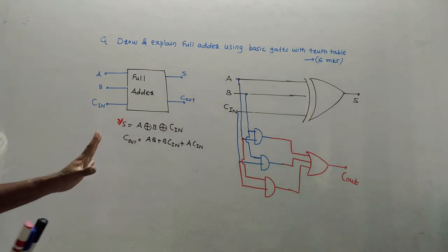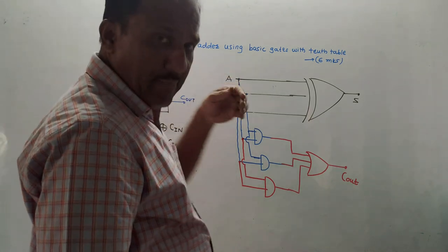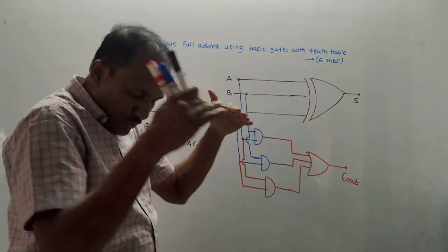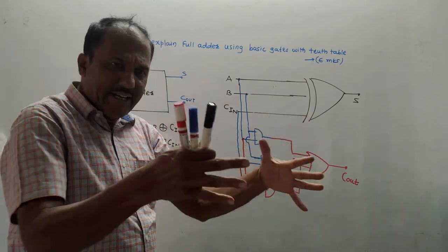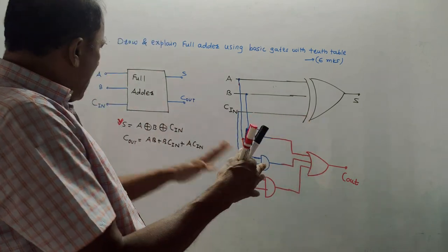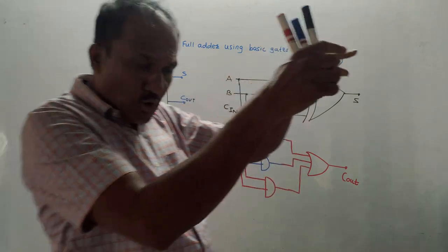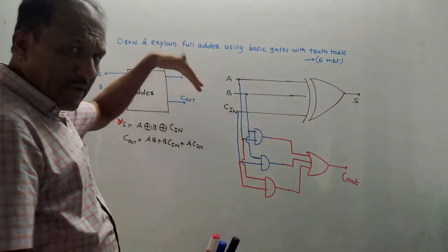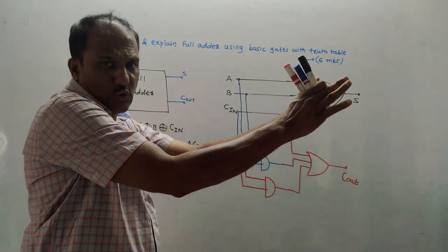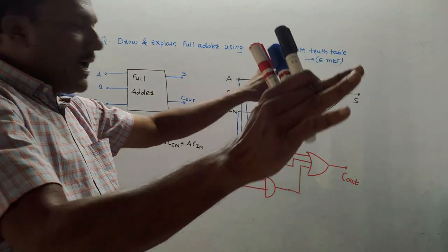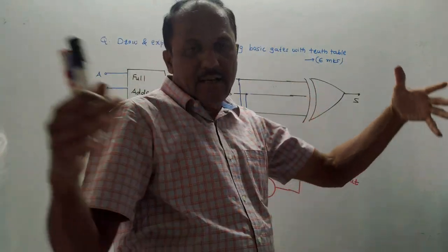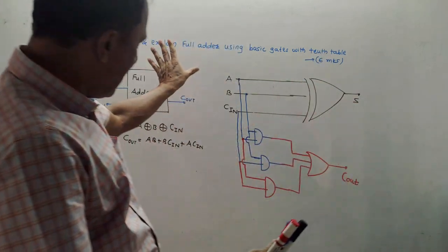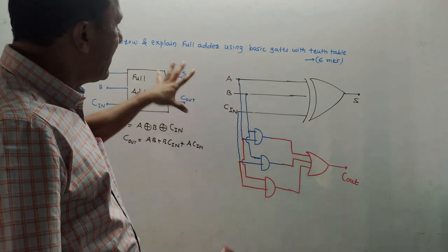This is the logical diagram of the full adder using basic gates — AND gates and OR gate. Additionally, the question may ask how to implement a full adder using two half adders. The answer is: join two half adders together and combine their carry outputs using an OR gate. The truth table remains the same.